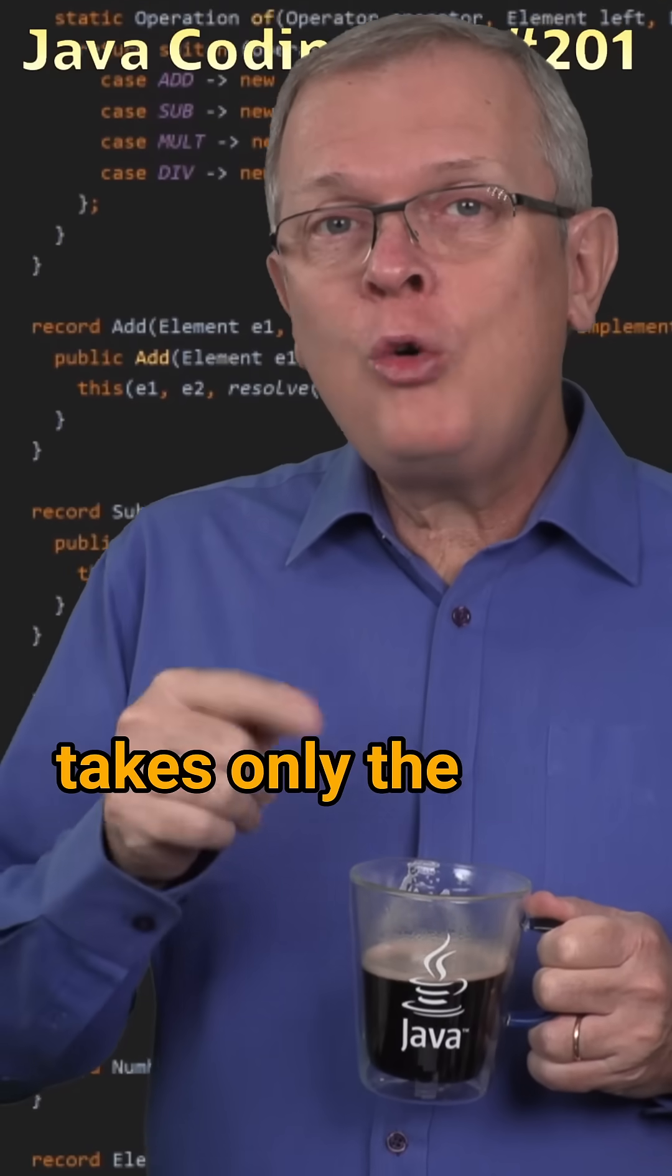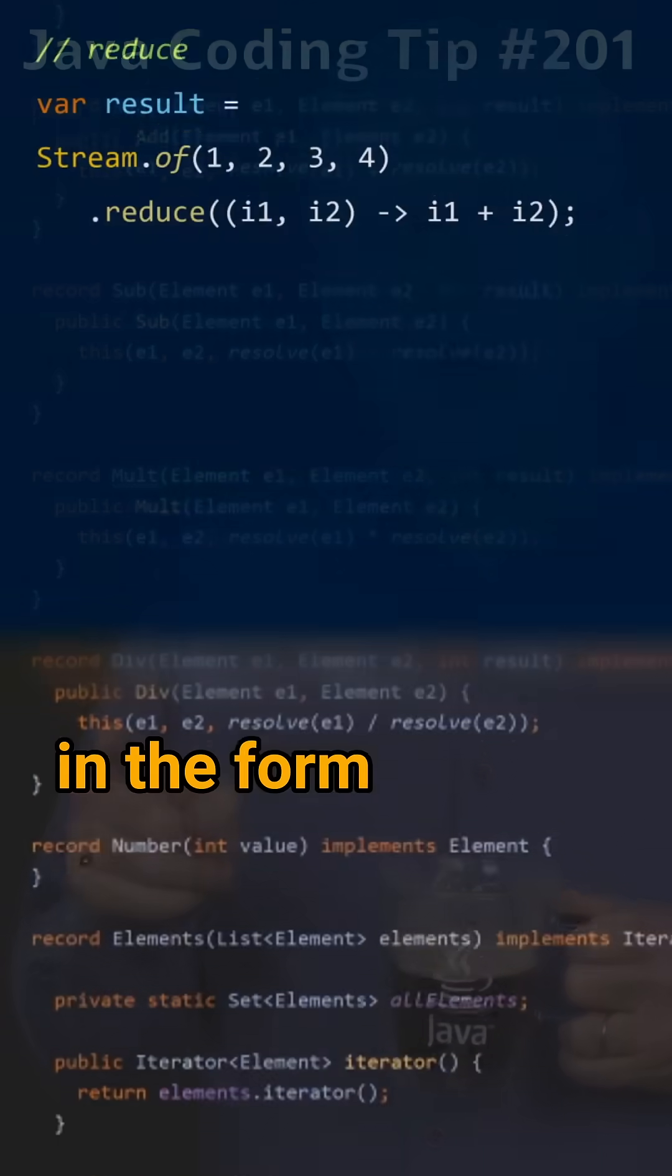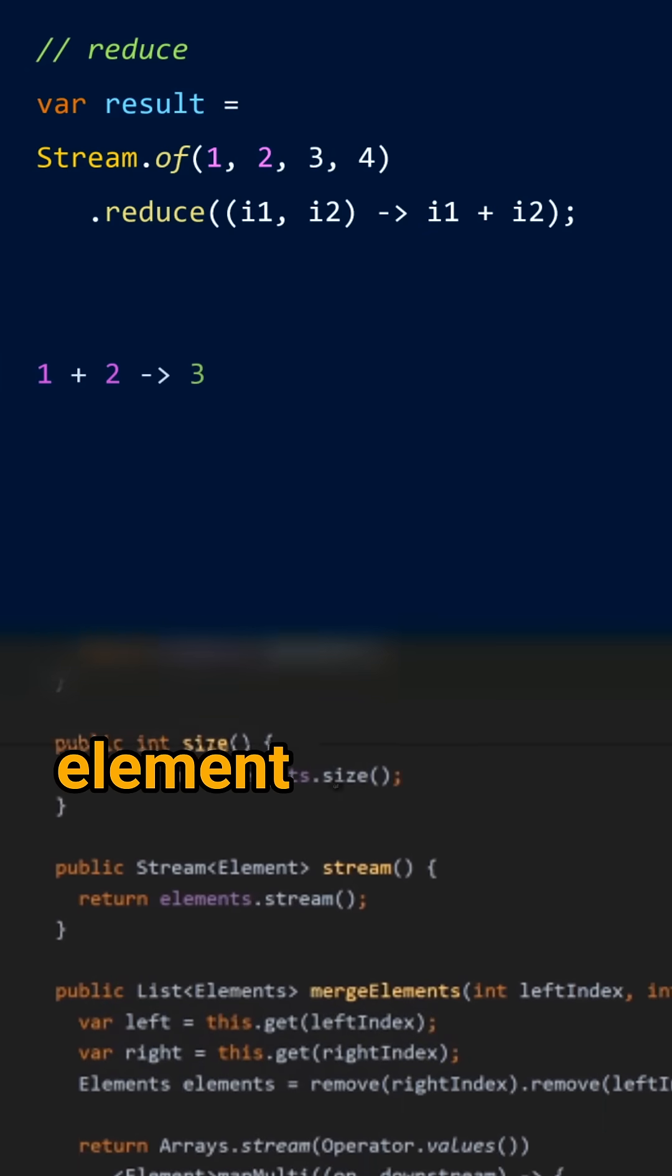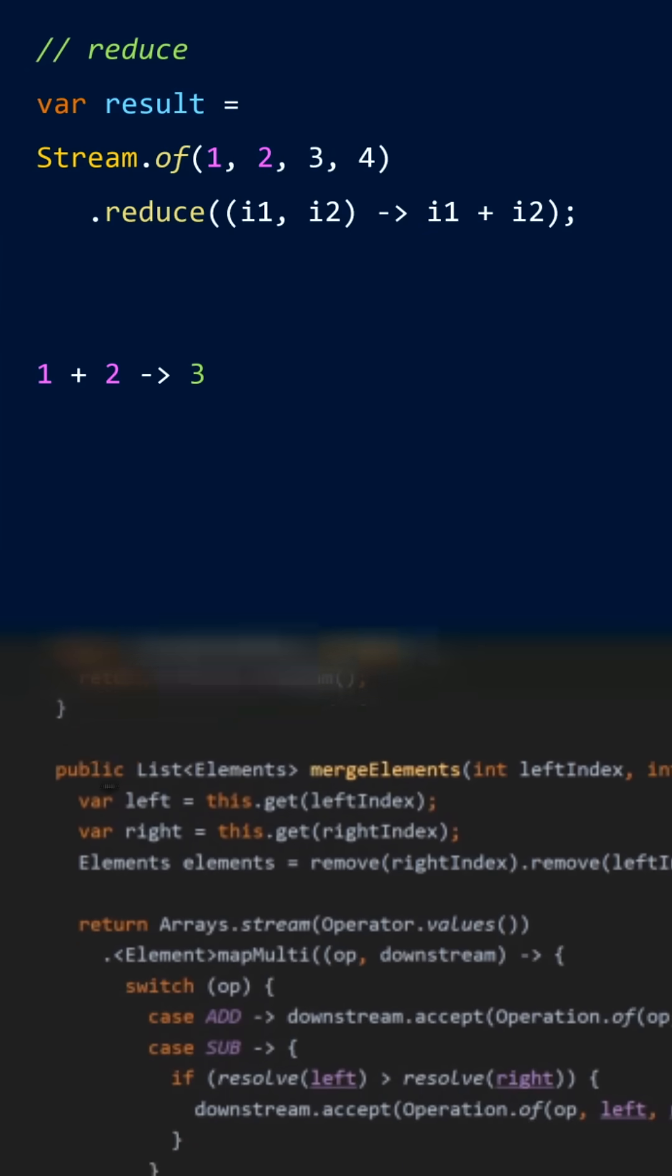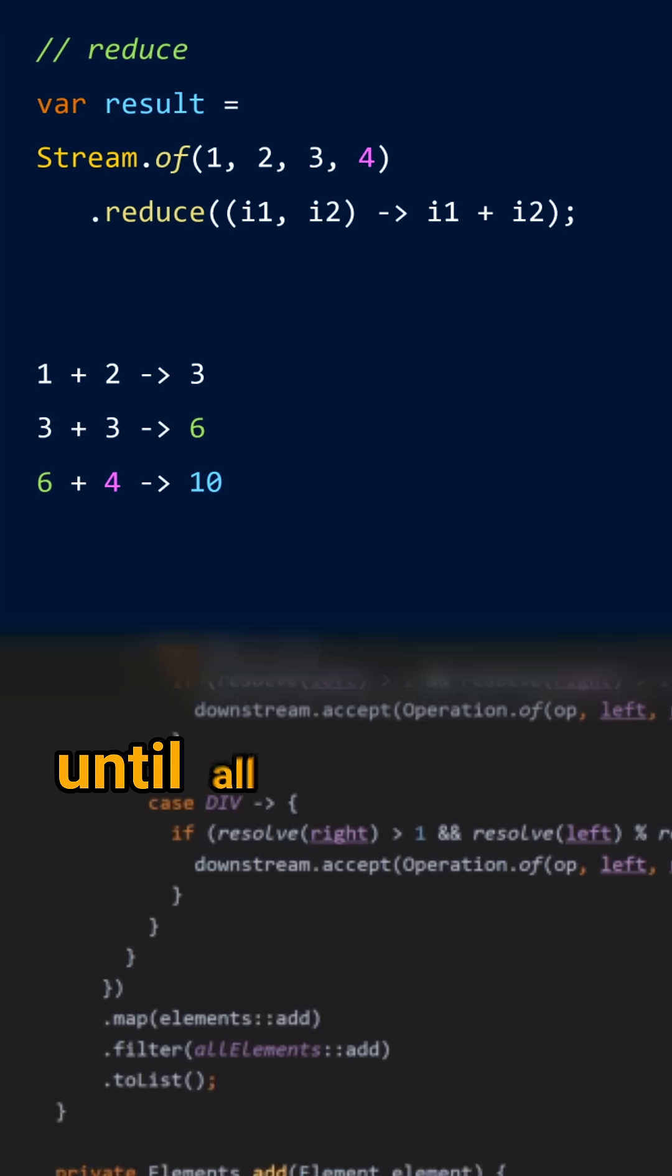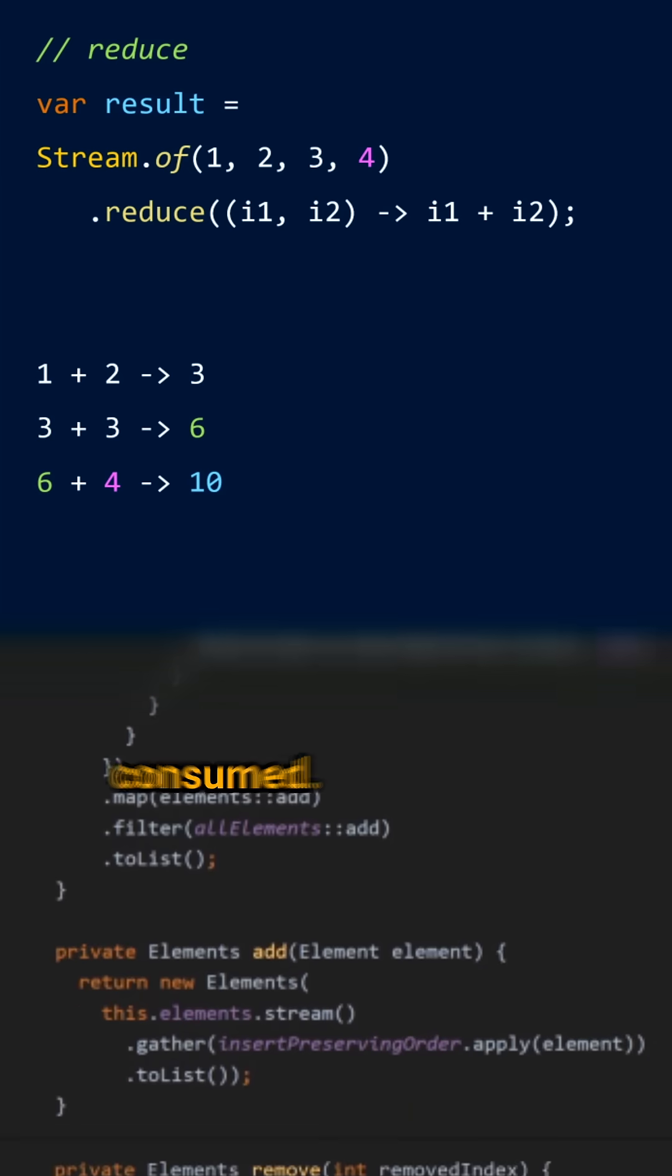The first one takes only the reduction operation in the form of a lambda expression. The first element and the second element of the stream are passed to this lambda. Then the result and the third element. Then the result and the fourth until all the elements of the stream are consumed.